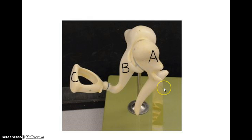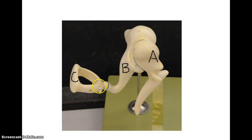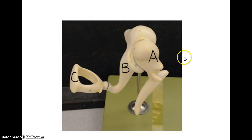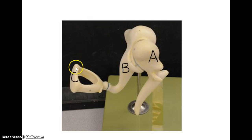Now here you're looking at the three auditory ossicles. Your tympanic membrane would be right in here. This is going to be the malleus, this is going to be the incus, and then you have the stapes. The stapes would cover what's called the oval window, which is part of the vestibule. The oval window would be located right here.